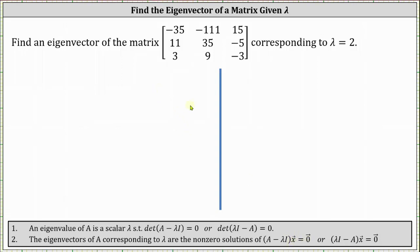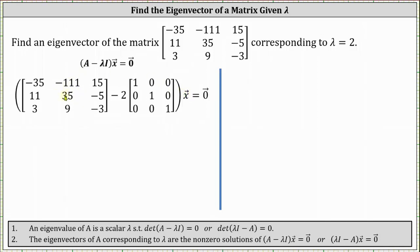Let's begin by setting up the equation. We have matrix A minus λ (in our case λ = 2) times the 3×3 identity matrix, times vector x, where x is an eigenvector, equals the zero vector.